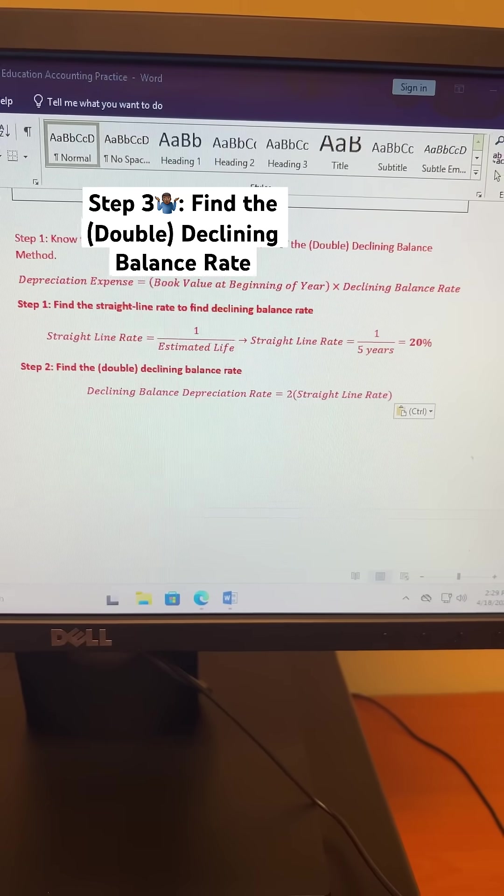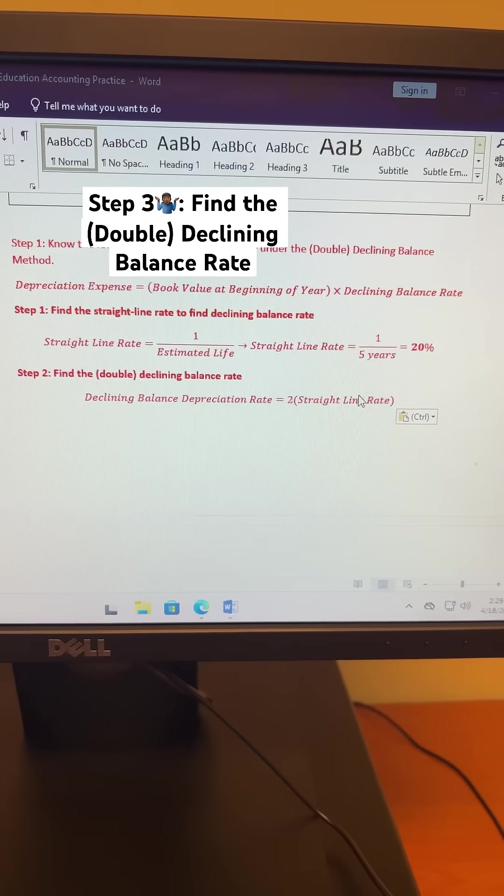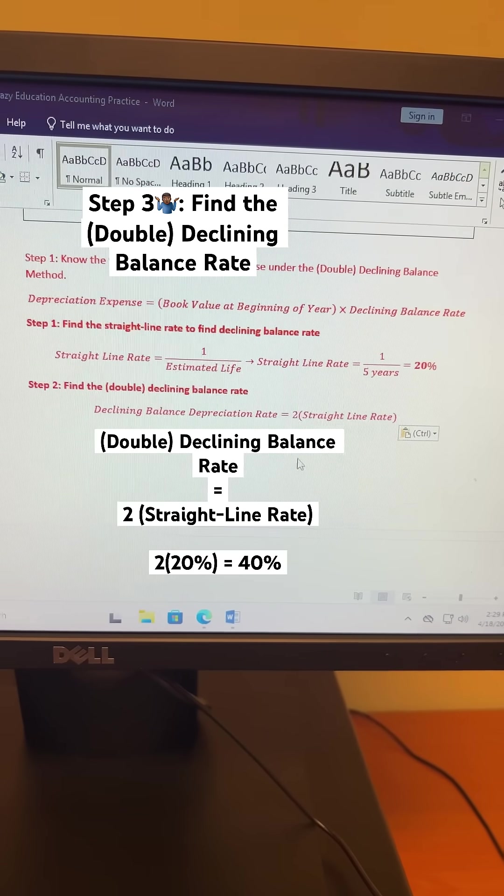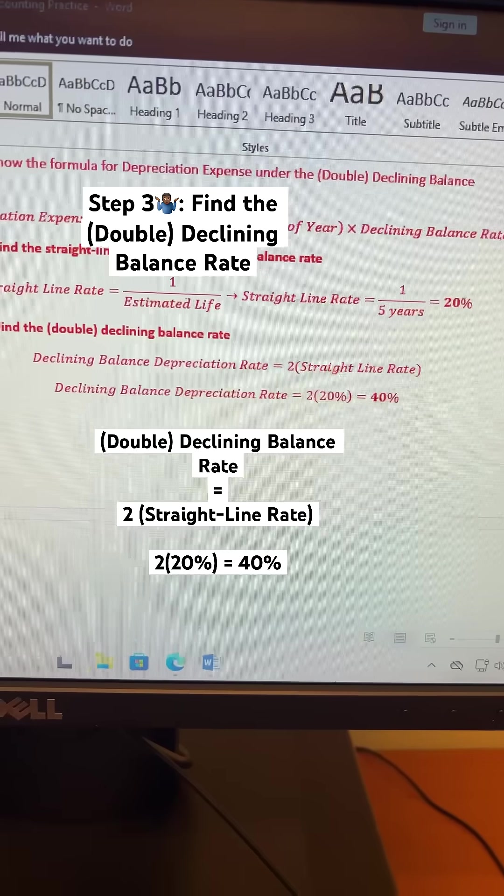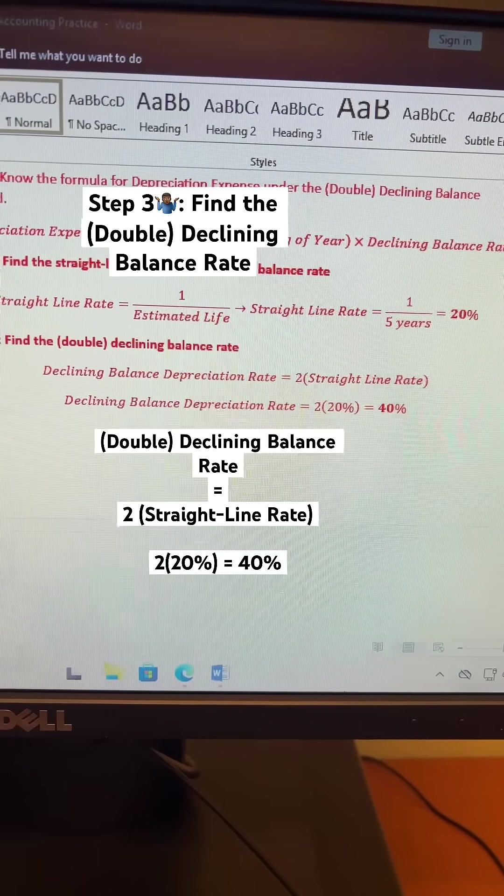Step 3 is to find your declining-balance rate. Your declining-balance rate is equal to 2 times your straight-line rate, hence the name double declining-balance. This is the double declining-balance method. So the declining-balance rate is 2 times 20%, which is 40%.